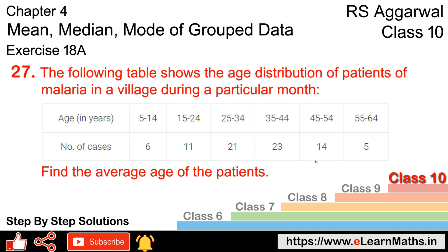Let's do question number 27 of Exercise 18a, that is mean, median, and mode of grouped data. The following table shows the age distribution of patients of malaria in a village during a particular month.